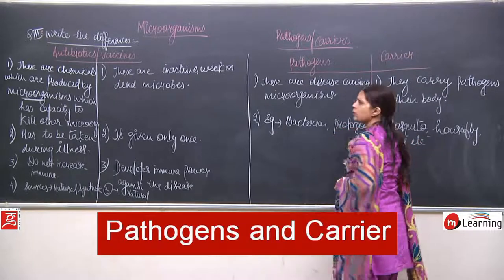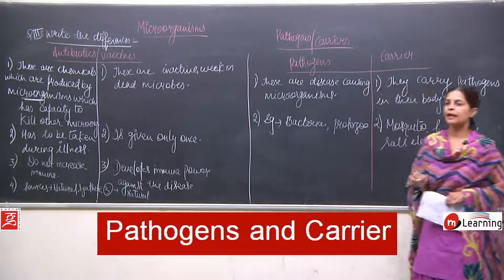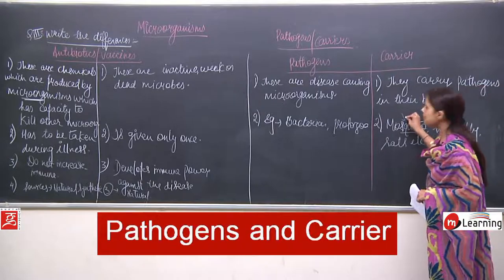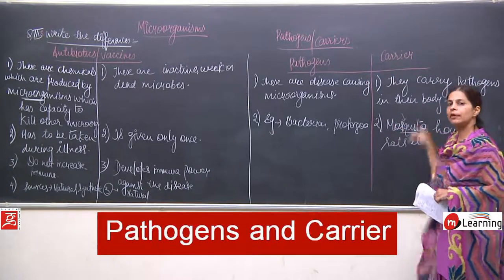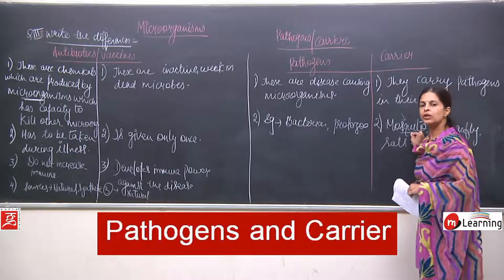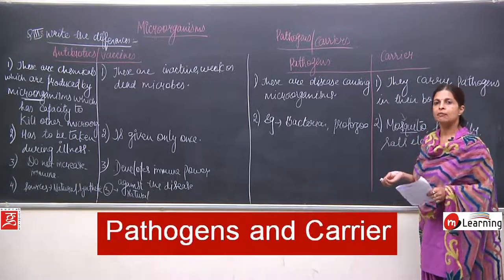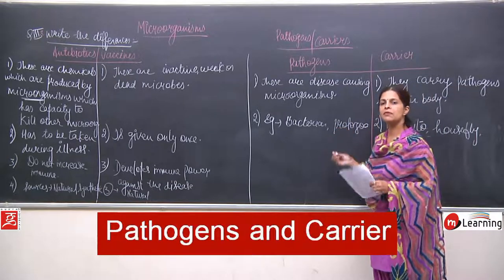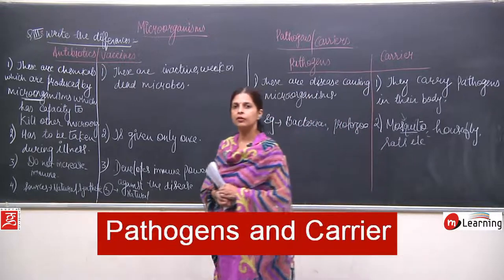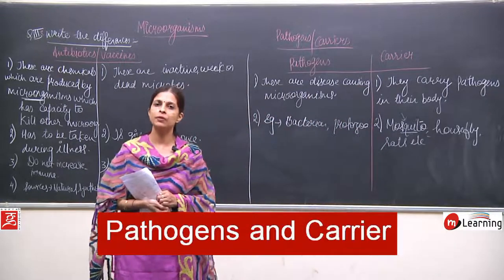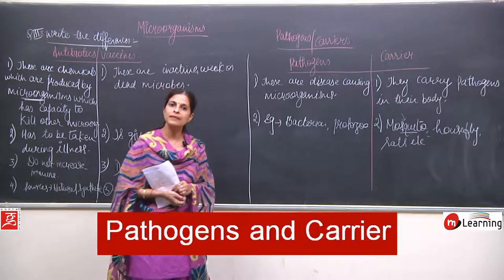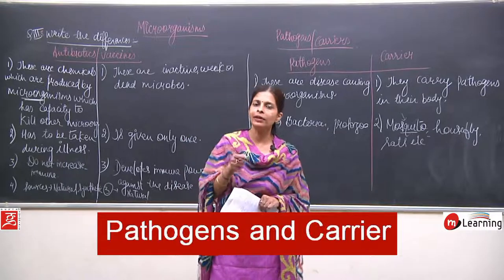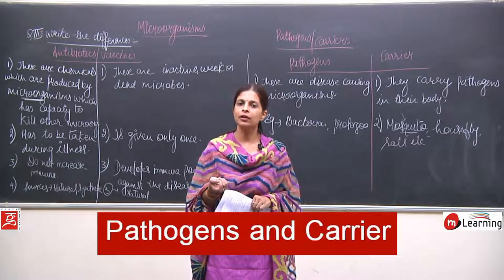These are examples of carriers. As discussed, mosquitoes carry plasmodium — the mosquito is carrying that microorganism in its body, so the mosquito is a carrier. But the pathogen is the microorganism which is responsible for causing the disease. The one who only carries the pathogens is known as the carrier.